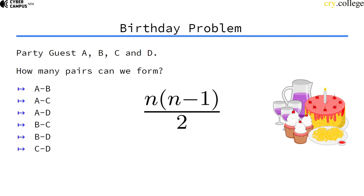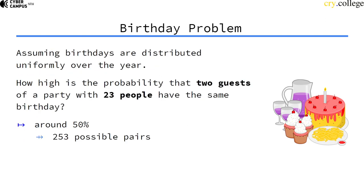This equation here shows how many pairs we can have, where n is the number of people at the party. So for 23 people, we already have, given this equation, 253 possible pairs.